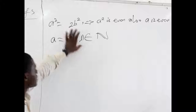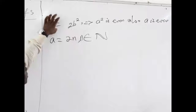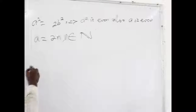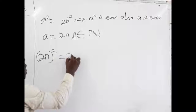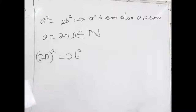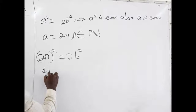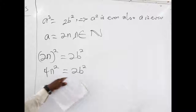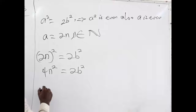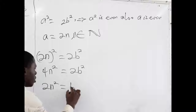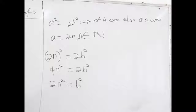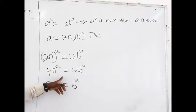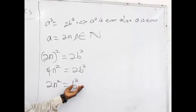Now, if A can be written as 2N, then we can substitute it back into our equation. Substituting 2N in place of A, we are going to have (2N)² equals 2B squared. In effect, we're going to have 4N squared equals 2B squared. Reducing both sides by 2, we are going to have 2N squared equals B squared. From here, we note that B squared is equal to 2N squared, which means that B squared is automatically even.